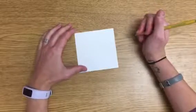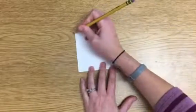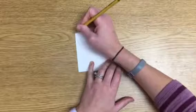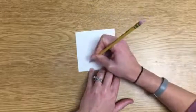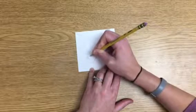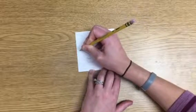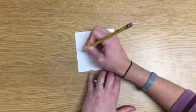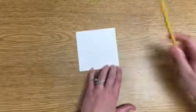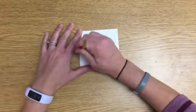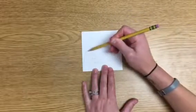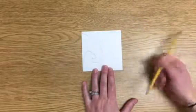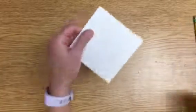What you do is just draw something on one side starting at the corner. So I started at one corner, drew a design, ended at the other corner, and I'm going to cut that out.